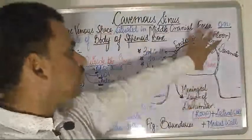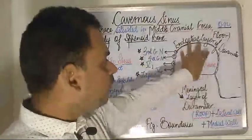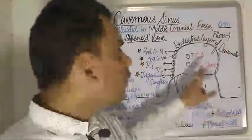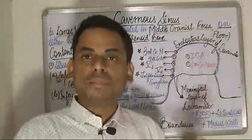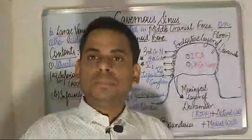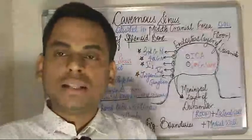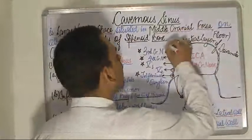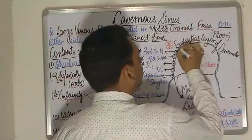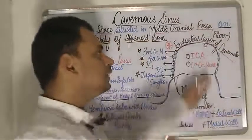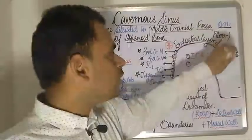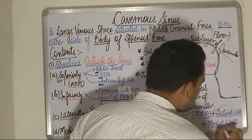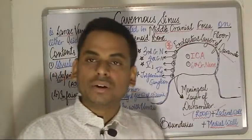The floor of the cavernous sinus is formed by the endosteal layer of the dura mater. The dura mater is the outermost covering of the brain — the brain is covered by three layers: the dura mater, arachnoid, and pia mater. The floor is formed by the endosteal layer, whereas the roof, lateral walls, and medial walls are formed by the meningeal layer of the dura mater.